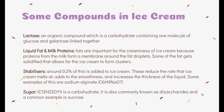Stabilizers make up around 0.2 percent of ice cream. These reduce the rate the ice cream melts at, add to the smoothness, and increase the thickness of the liquid. An example of this is sodium alginate, which has the formula: 6 carbon, 9 hydrogen, sodium, and 7 oxygen.